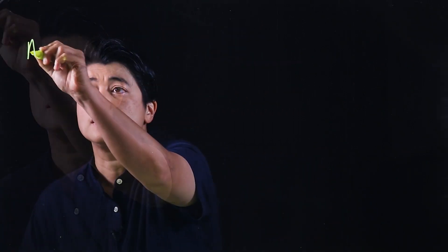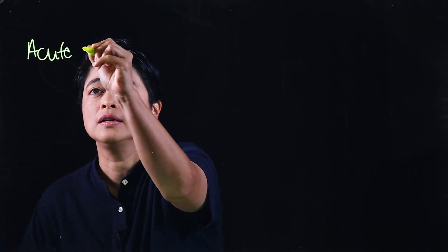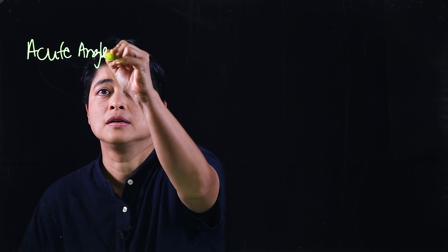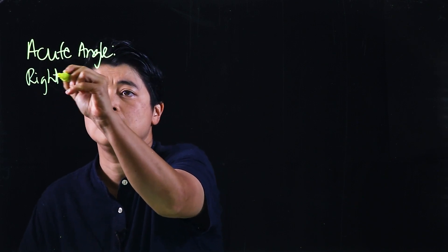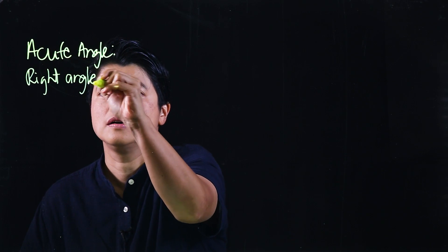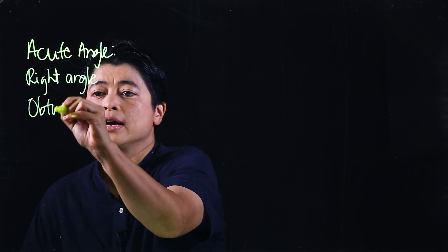In this chapter we need to teach our kids how to distinguish the three different types of angles. There's actually a fourth type which is not mentioned, so we will just discuss three. The three types are acute angle, right angle, and obtuse angle.